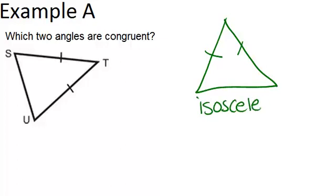In example A, it asks which two angles are congruent. This is an isosceles triangle because it has two sides that are congruent, and one of the properties of an isosceles triangle is that its base angles will always be congruent. The base angles are the angles that are across from the congruent sides.